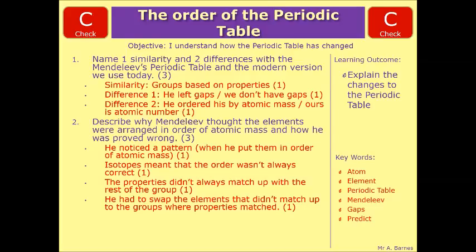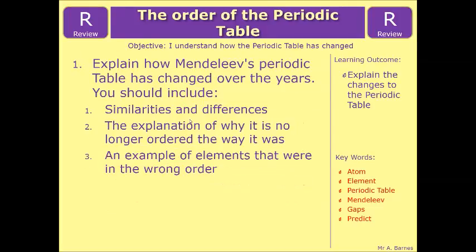Hopefully that's cleared up this section, and if you're feeling confident, have a go at the review section, which is, explain how Mendeleev's periodic table has changed over the years, and you should include similarities and differences, the explanation of why it is no longer ordered the way it was, and an example of the elements that were in the wrong order. So think back to the last part of the video that I showed you. And that ends this video.